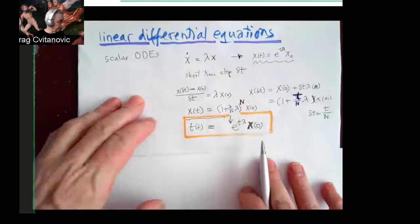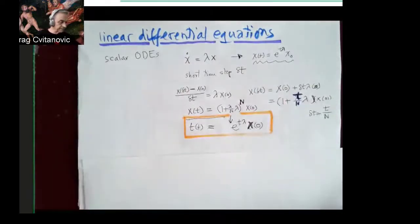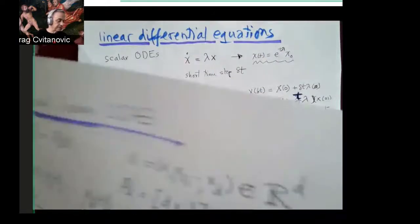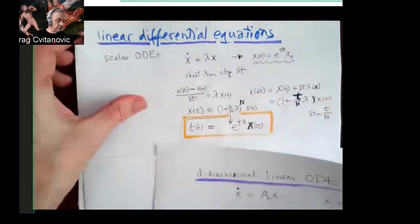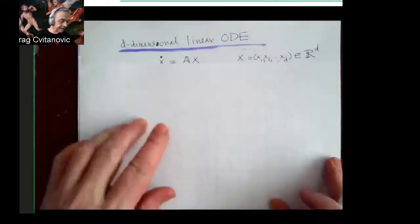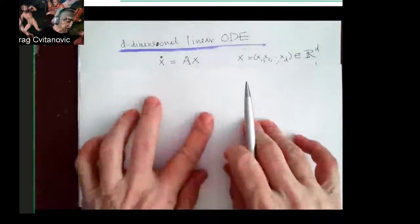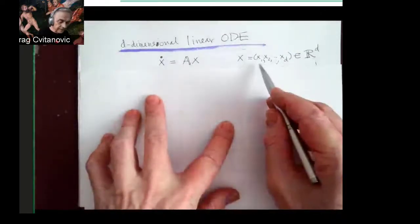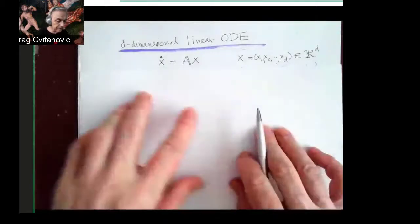Now, the reason why I'm doing this slightly awkward thing is because when we do the same thing for D-dimensional linear ODEs, then...